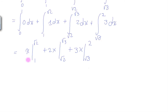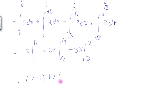This equals: square root of 2 minus 1, plus 2 times the quantity square root of 3 minus square root of 2, plus 3 times the quantity 2 minus square root of 3.